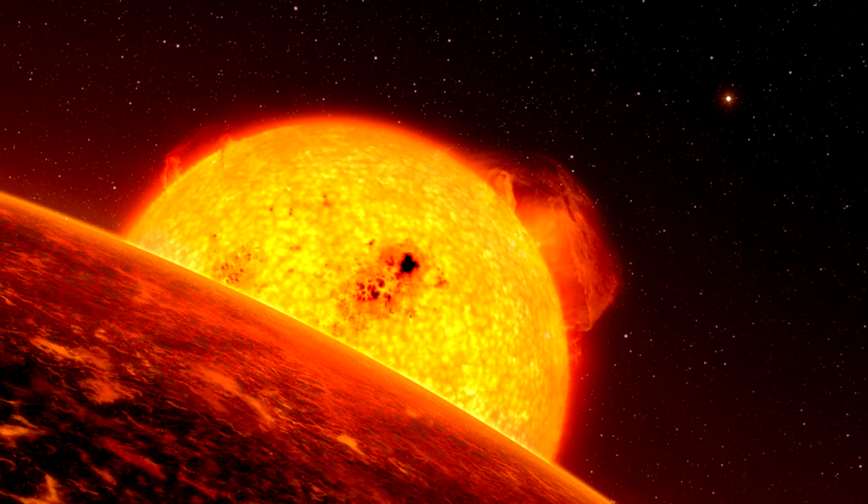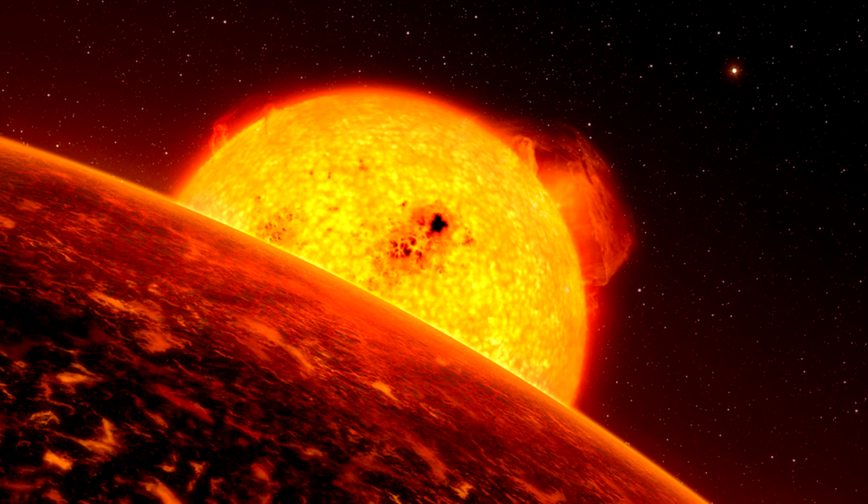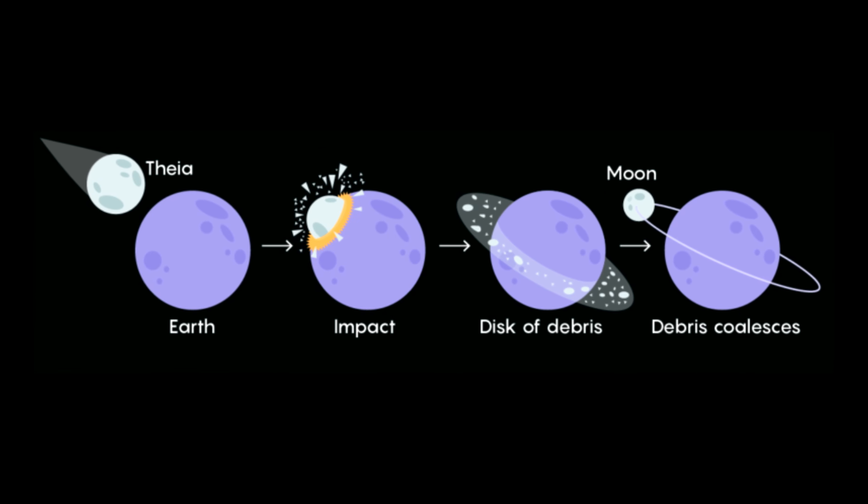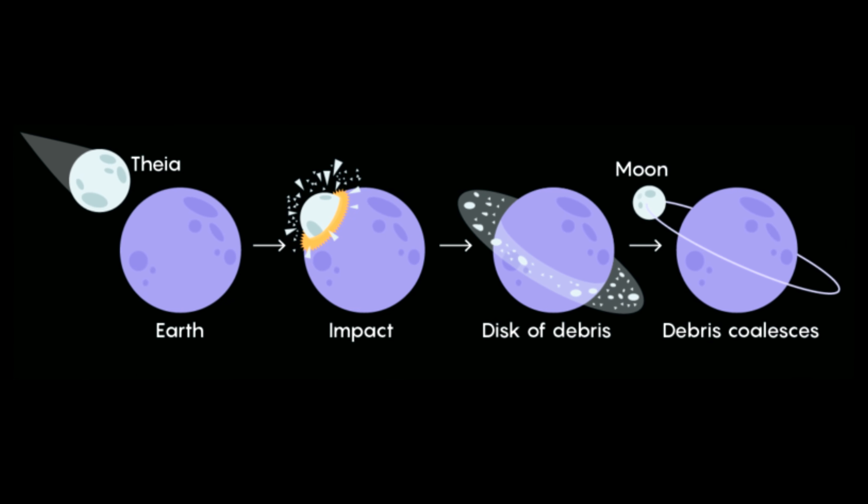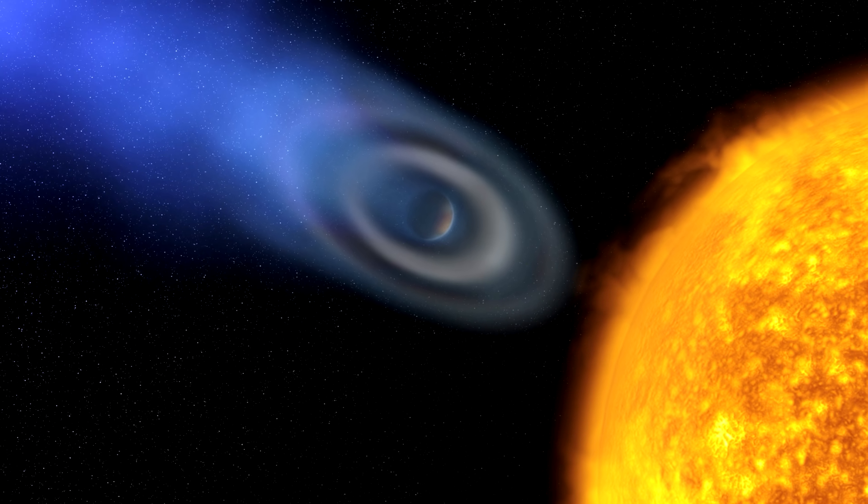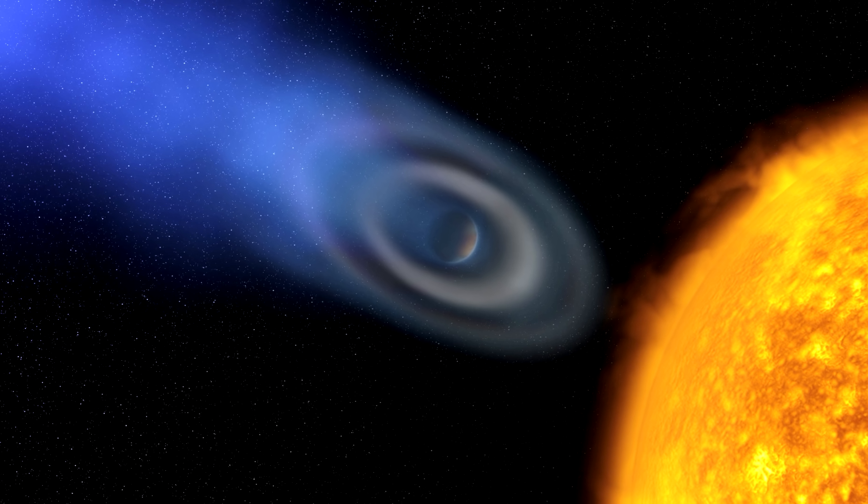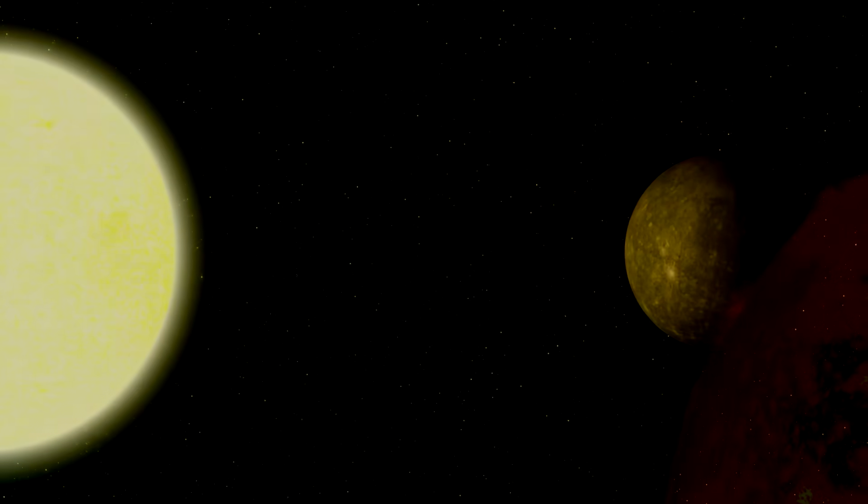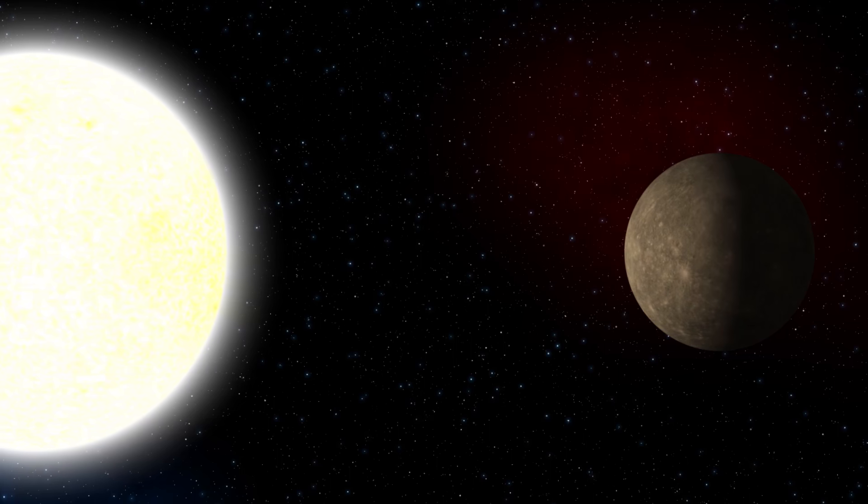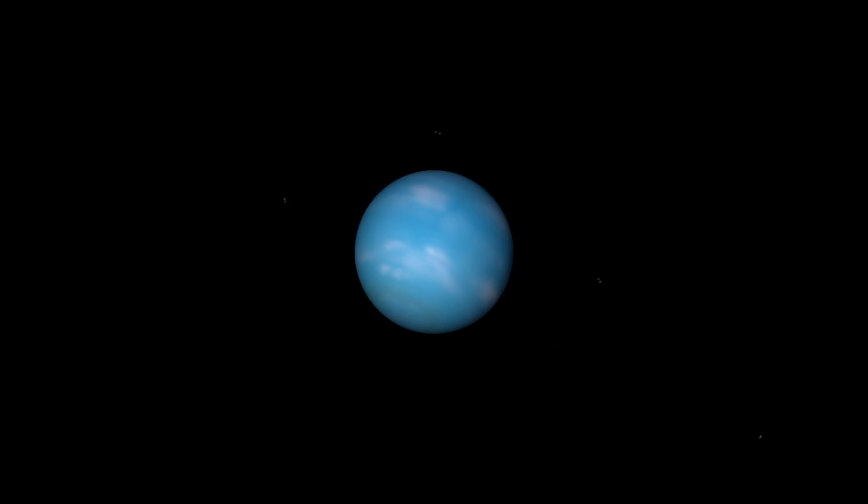Hades might not have been the only planet that used to be in our solar system but has been lost. There is of course Theia, which collided with the Earth to form the Moon. There is some evidence that seems to suggest that the solar system at some point had a hot Jupiter. And it's very likely planets have collided with Mercury and Uranus at some point in their past to explain their high iron concentrations and axial tilts. So Hades definitely wasn't the only planet gone missing.